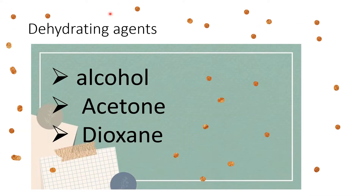Next are dehydrating agents. Dehydration means they remove the water molecules from the tissue samples, so that all types of autolysis and putrefaction can be prevented with the help of dehydration. The dehydrating agents are alcohol, acetone, and dioxane.